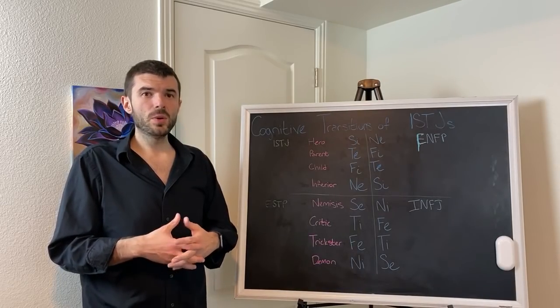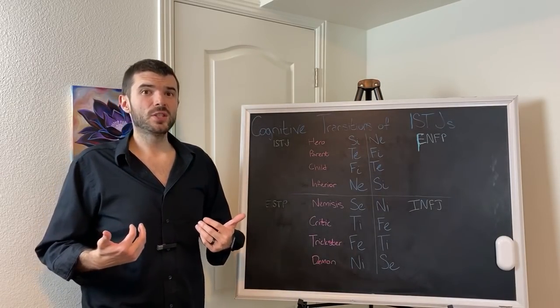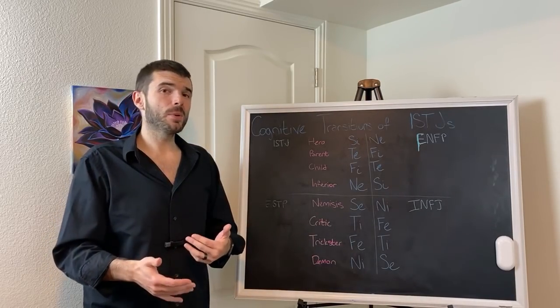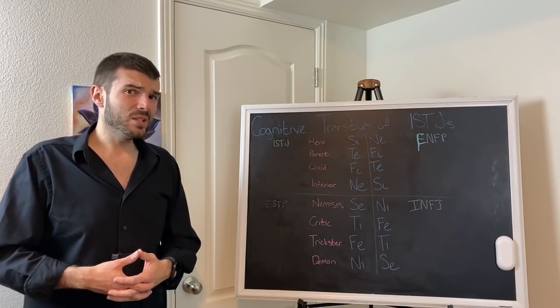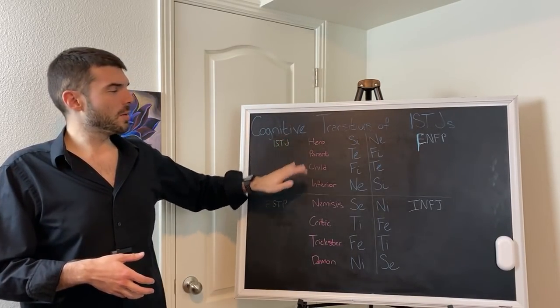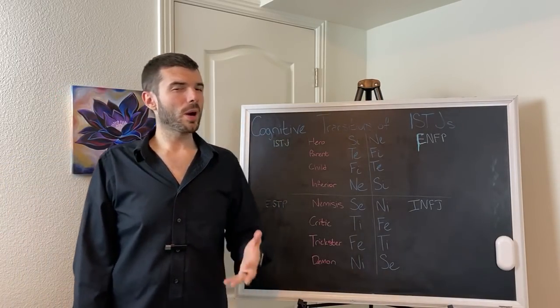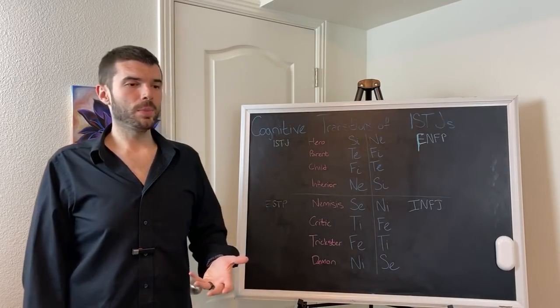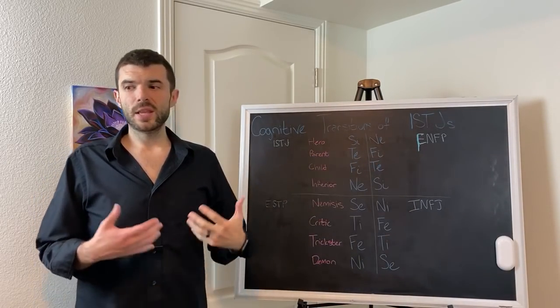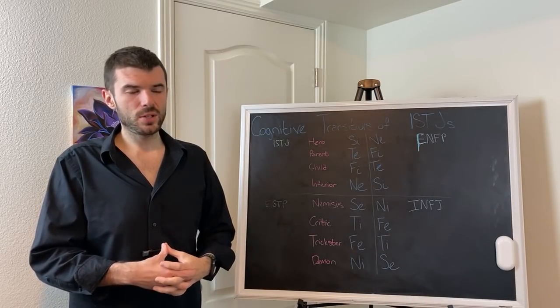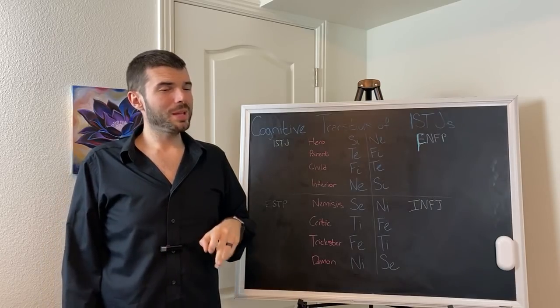Sometimes ISTJs can be very manipulative. Sometimes they'll change their loyalty like that. They'll end up having conflicting loyalties. They'll talk to one group of people and say that other group sucks, then go talk to the other group and say the first group sucks.